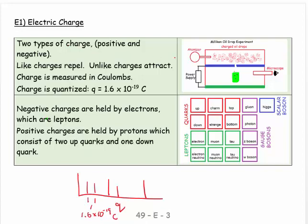There are two types of charge: positive and negative. Like charges repel, unlike charges attract. Charge is measured in coulombs and is quantized. For example, the charge of an electron or proton is 1.6 times 10 to the minus 19 coulombs—that's what Millikan figured out.